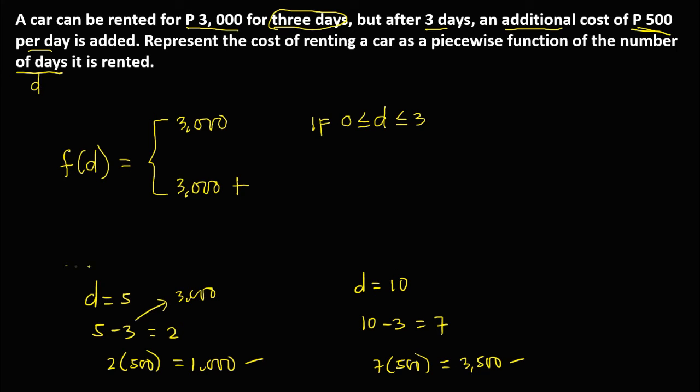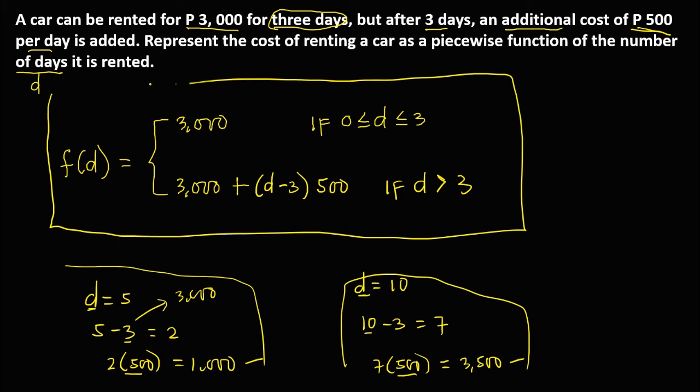To create a formula based on this equation, we have the number of days minus 3 times 500, if the number of days is greater than 3. This is now the piecewise function.